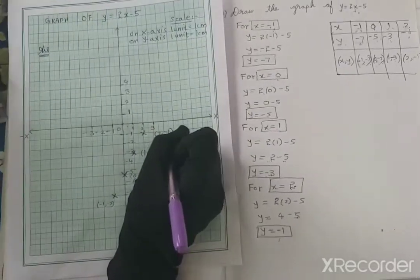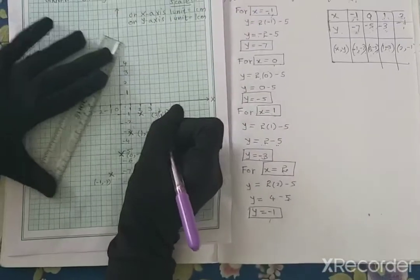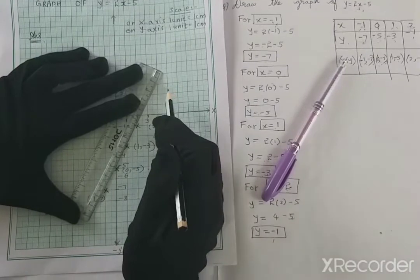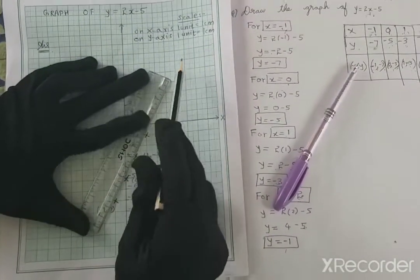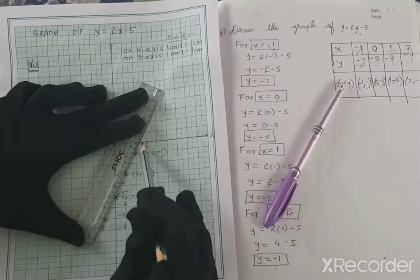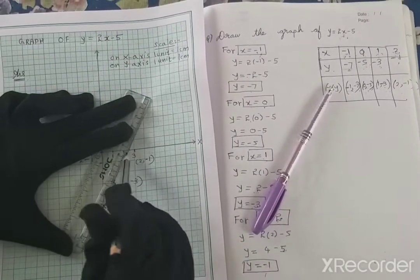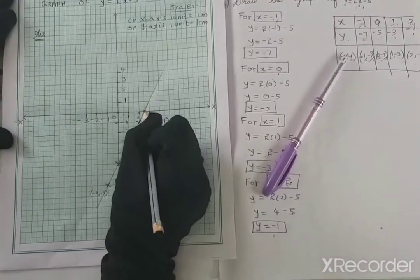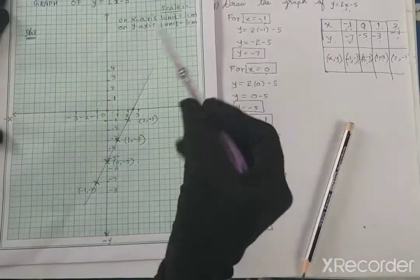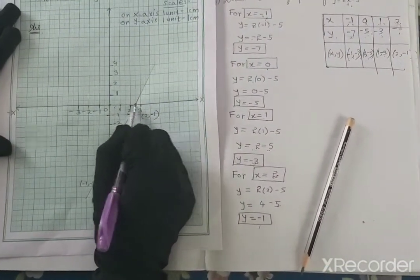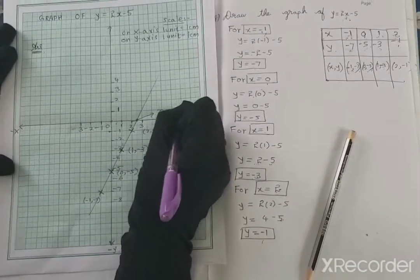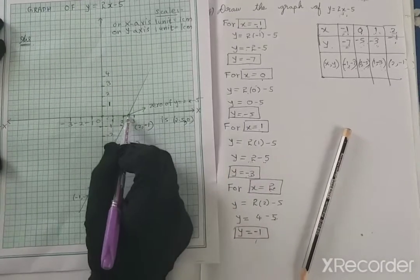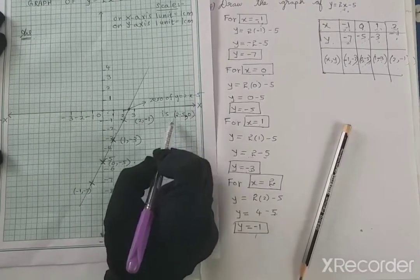As the equation is a linear polynomial with degree 1, the graph should be a straight line — always remember that. I will join all the points and I am getting a straight line, which means my equation is correct. Extend the line so it meets the x-axis to find the zero of the polynomial. Here it meets at x equal to 2.5, so the zero of y is equal to 2x minus 5 is the point (2.5, 0). The y-coordinate is 0 because the point lies on the x-axis.